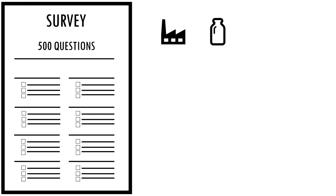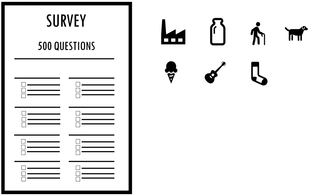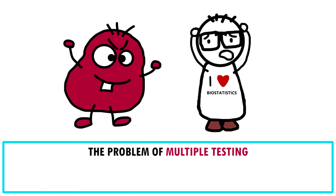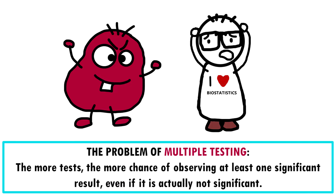milk consumption, age, number of pets, favorite ice cream color, musical taste, current sock color, and a few dozen other factors, you'll find that something is significantly correlated to cancer. The point is: the more tests, the more chance of observing at least one significant result, even if it's actually not significant.